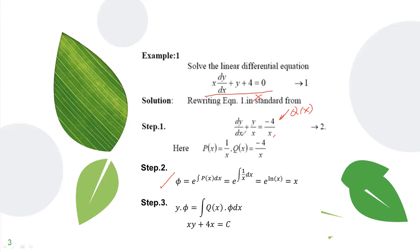Upon knowing P of x and Q of x, you go to step 1 and determine the integrating factor. So phi is e raised to the integral of P of x, which is 1 over x dx. When you evaluate this, that's ln of x. And from differential calculus, e raised to ln is equivalent to 1. As such, e raised to ln of x is now x — this is your integrating factor. Then you follow the formula: y times phi.